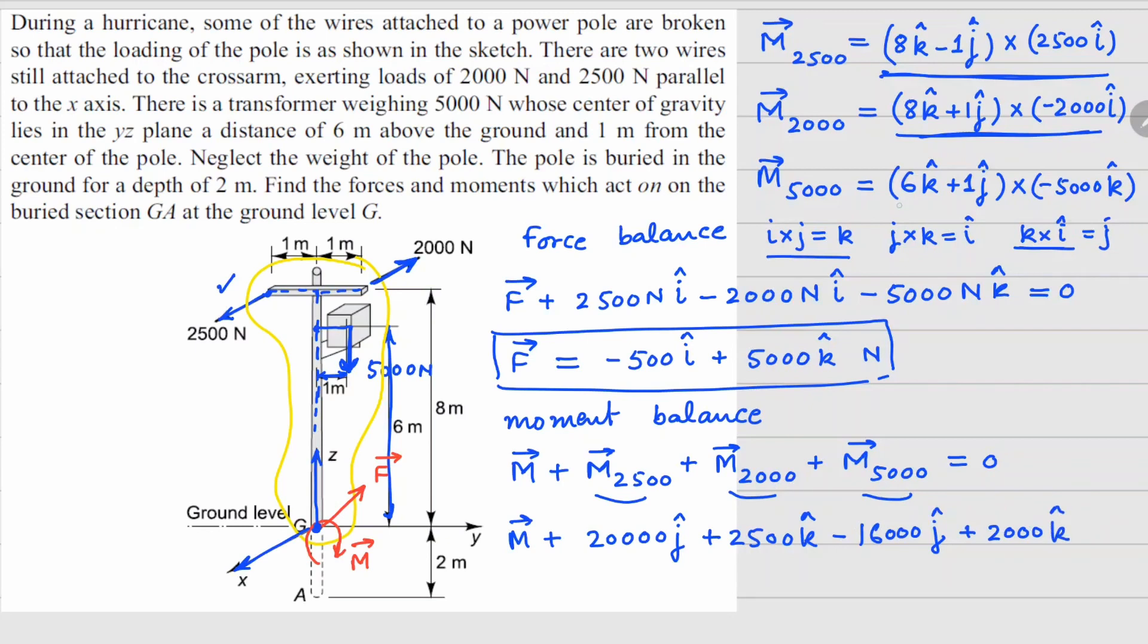The last one here, k cross k is going to be 0. And j cross k is going to give you i cap. So minus 5000 i cap equals to 0.